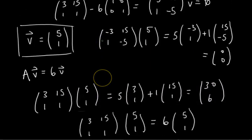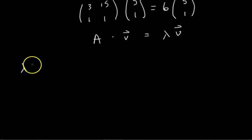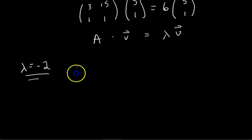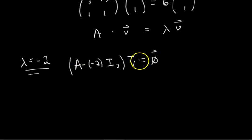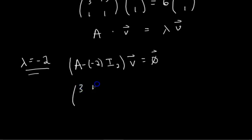Now let's do the same thing for lambda equals negative 2 — find a corresponding eigenvector. To do this, we have to set up A minus (-2)·I_N as our matrix in the homogeneous equation. Our original matrix was [3, 15; 1, 1], so we compute [3, 15; 1, 1] minus (-2) times [1, 0; 0, 1].